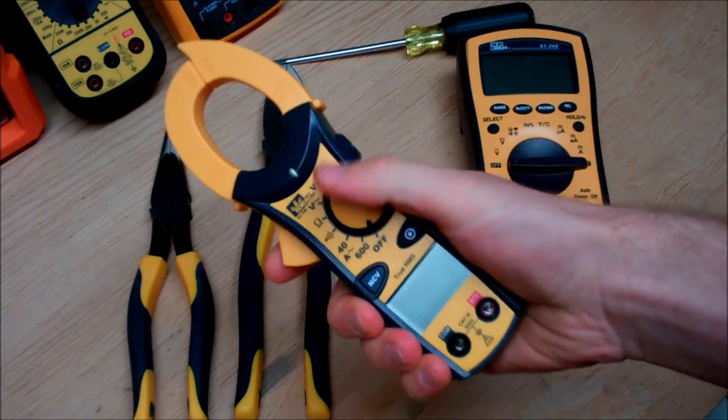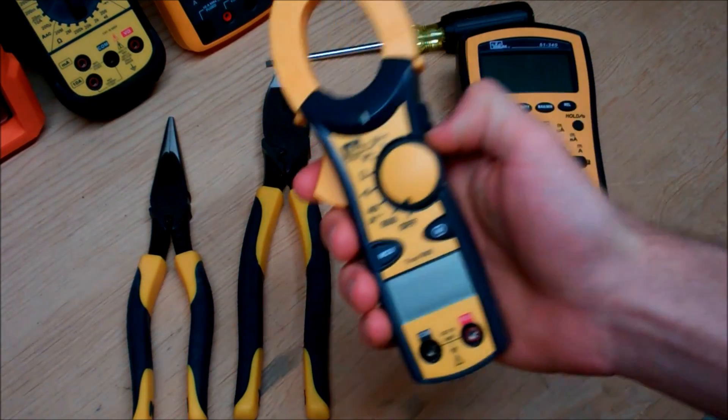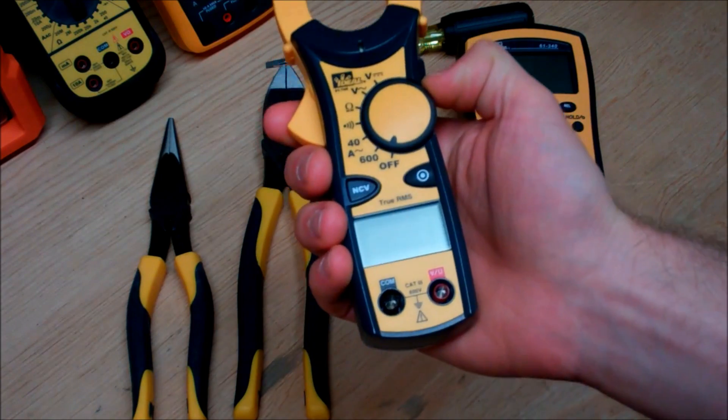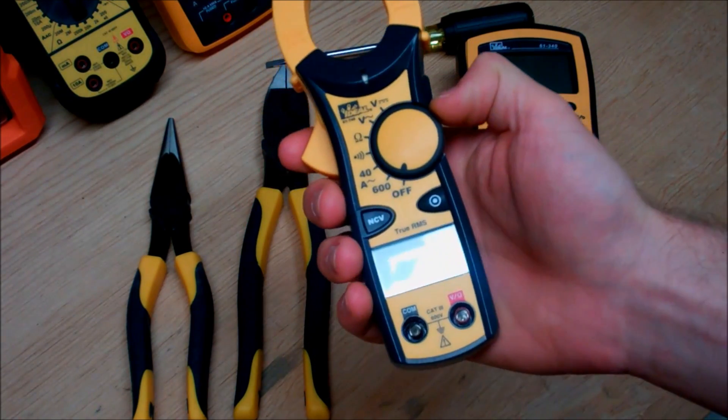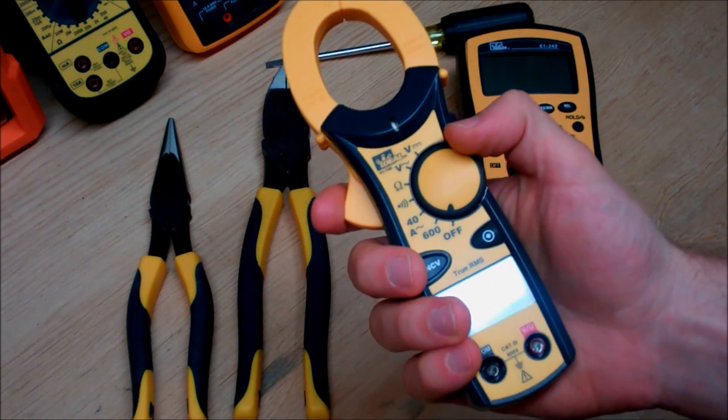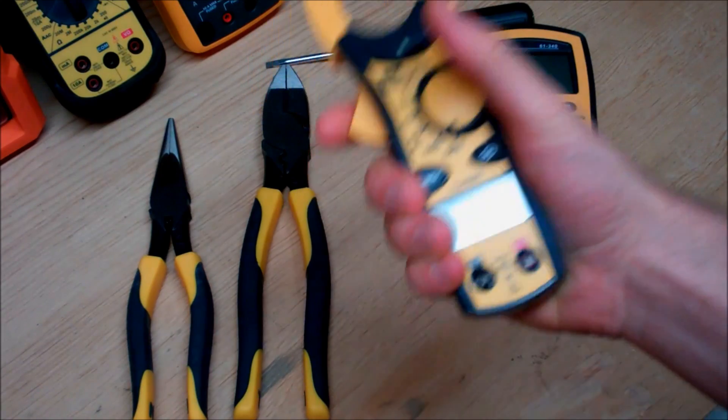When we first look at this multimeter, the one thing you've got to take into consideration is it doesn't have a diverse range of operation. It doesn't have the ability to measure small signals such as milliamps and microamps. This is meant for the big jobs. It will observe electricity with true RMS values and measure current up to 600 amps.